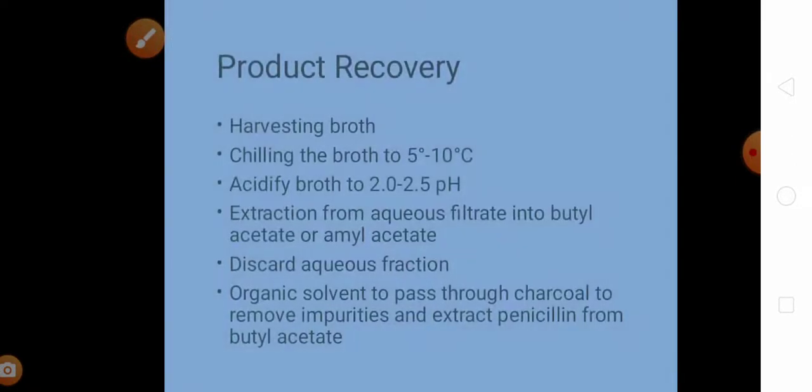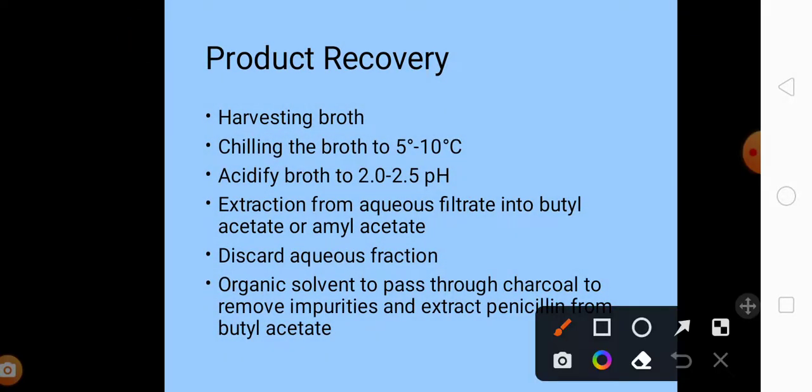Now we have reached the product recovery process. First, we are harvesting the broth from fermenter tank. The broth is harvested from fermentation tank by filtration using rotary vacuum filtration. This broth is chilled to 5 to 10 degrees Celsius. Why do we need the broth to be chilled? Because penicillin is a highly reactive compound and it can be destroyed by the alkali and enzyme action.